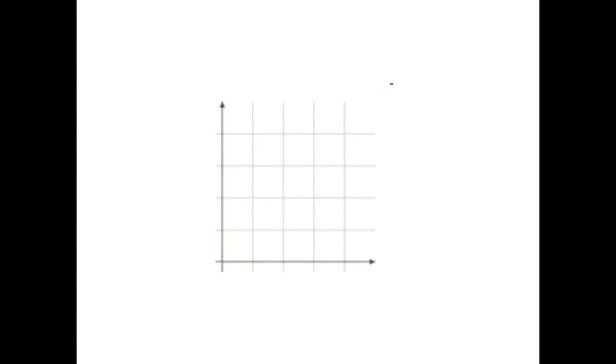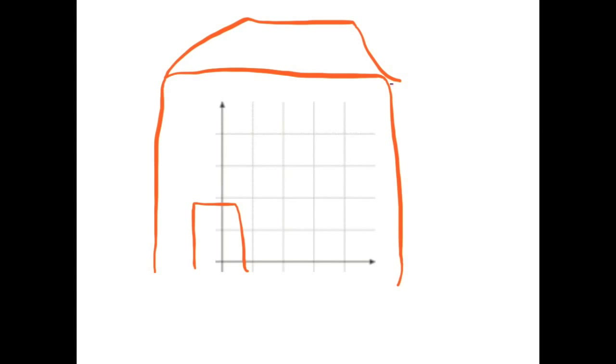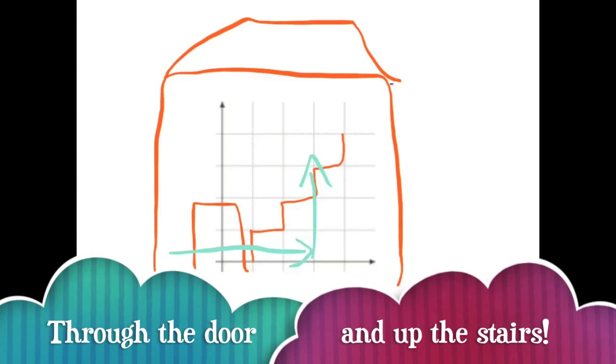Another simple way to remember the correct order is to imagine you're entering a house. First you go through the door, and then you go up the stairs. So when you're plotting a point, first you go horizontally through the door to find your X coordinate along the X axis. And then you go vertically up the stairs to find your Y coordinate. Just try to remember, through the door and up the stairs.